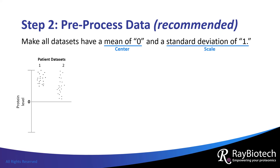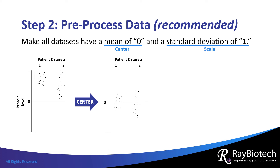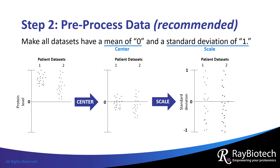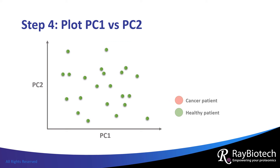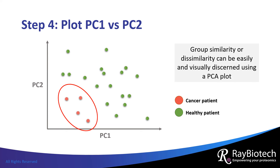In this example, each patient would represent a data set, where each spot would represent a unique protein and its level in the blood. Here I show the centering of data sets from two patients so that they have the same mean. Then the data sets are scaled so that they also have the same standard deviation. The third step is the automatic calculation performed by an algorithm to generate the PCs. The fourth step is to plot PC1 versus PC2. Here we see that the cancer patients are clustered toward the lower left of the plot. This is one of the reasons why PCA is so popular — group similarity or dissimilarity can be easily and visually discerned by a PCA plot.